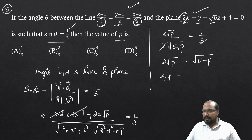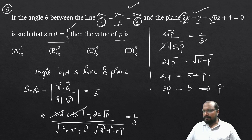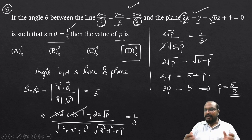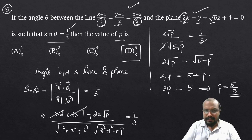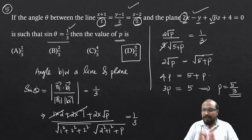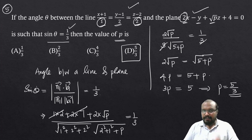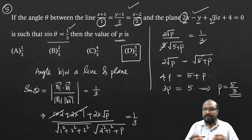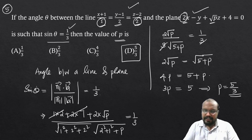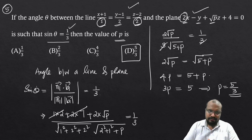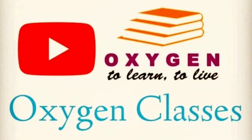Solving: 2√p = √(5 + p). Squaring both sides: 4p = 5 + p, so 3p = 5, giving p = 5/3. The final answer is p = 5/3, option D. This completes the discussion of 5 previous year questions on 3-dimensional geometry. Thank you for watching.